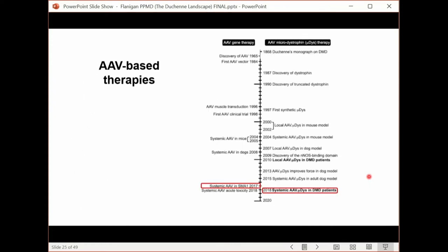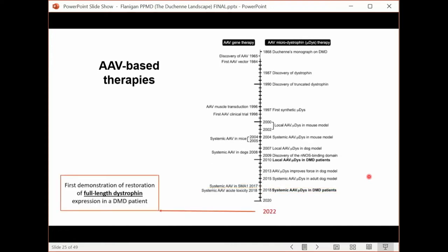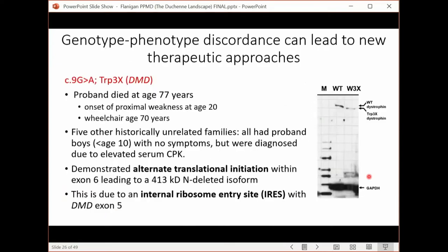So I want to mention one other AAV-based therapy, and I want to add one more date to the timeline here, and that's 2022, because I'm going to share some data showing the first demonstration of restoration of full-length dystrophin expression in a DMD patient. This story actually begins with an observation we found in trying to explore why some patients didn't look as severe as they should have. This was an example of a patient with a nonsense mutation in exon 1. But this gentleman who I met in late adulthood was in a wheelchair full-time about 70 years of age, and he died about 77 years of age. When we did a muscle biopsy, we saw that there was about 15% levels of dystrophin of a slightly smaller size.